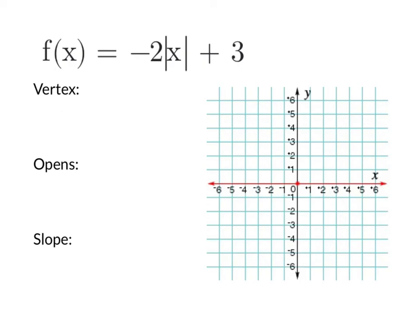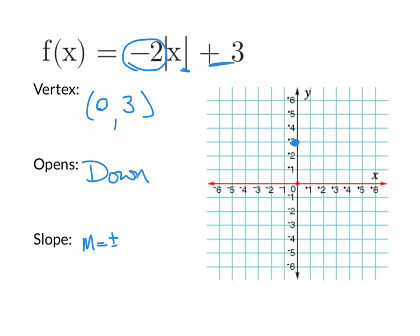So here we have f of x equals negative 2 times absolute value of x plus 3. First we're going to identify the vertex. Notice we're not adding anything inside, so the x-coordinate is going to be 0. Then we take the same as what's on the outside at plus 3, so our vertex is going to be at 0, 3. Then we look at the number out in front — because it's negative, it's going to open down. And because it's 2, that means our slopes are going to be plus or minus 2. Absolute value means it's got a V shape that opens down with a slope of 2. So instead of going up 2 and over 1, we're going to go down 2 and over 1, and down 2 and back 1. We'll do it again to get another set of points. Now we can grab our straight edge and go ahead and graph it — the left side comes from the vertex down this way, and on the right side will come from the vertex down this way.